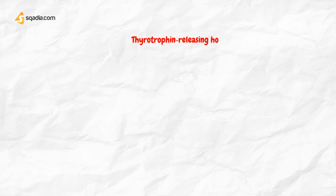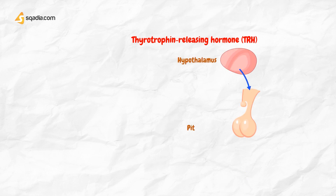Thyrotrophin-releasing hormone (TRH) is a tripeptide synthesized in the hypothalamus and transported in the capillaries of the pituitary portal venous system to the pituitary gland, where it stimulates TSH synthesis and release. Thyrotrophin (TSH) is a glycoprotein hormone that is released from the pituitary gland.